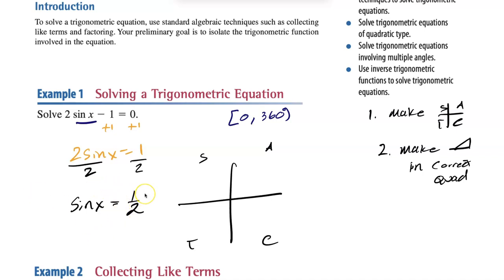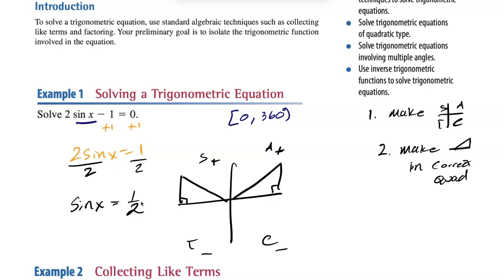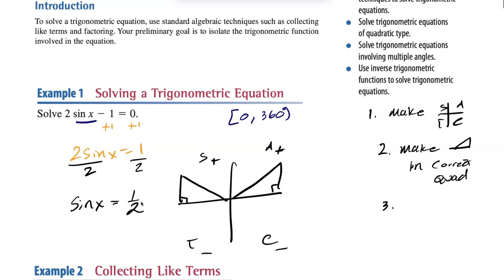Sine is positive, so remember where sine is positive — that's quadrants A and S. It's negative in the other two quadrants. Since we have a positive sine of 1/2, I'm going to make my triangle in quadrants A and S. Next, we're going to fill out the sides using SOHCAHTOA.